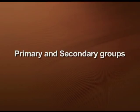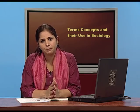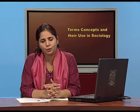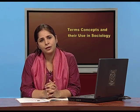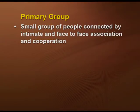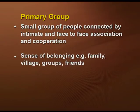When we talk about primary and secondary groups, it is based on the number of people involved in that particular group and the kind of interaction they are having. A primary group is a small group of people connected by intimate and face-to-face association and cooperation, and there is a strong sense of belonging. Examples of primary groups are family, village, and friends.